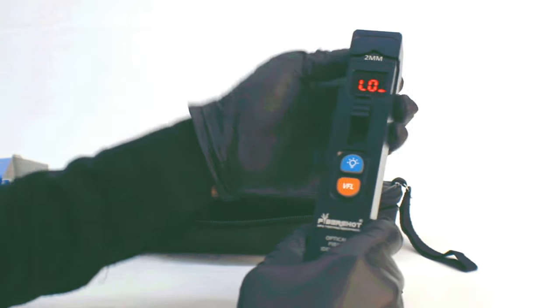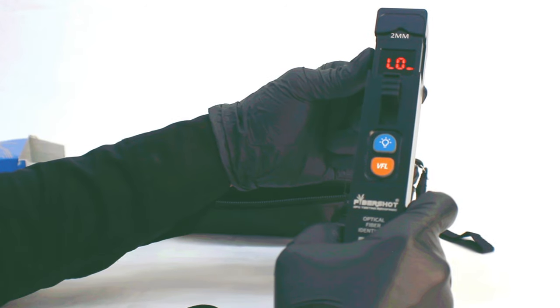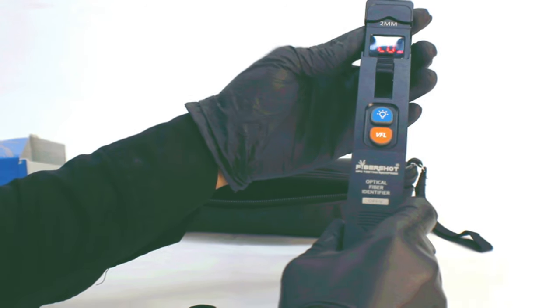And after pressing the blue button, it turns on the torch. Basically, the identifier is used to see the direction of the signal.